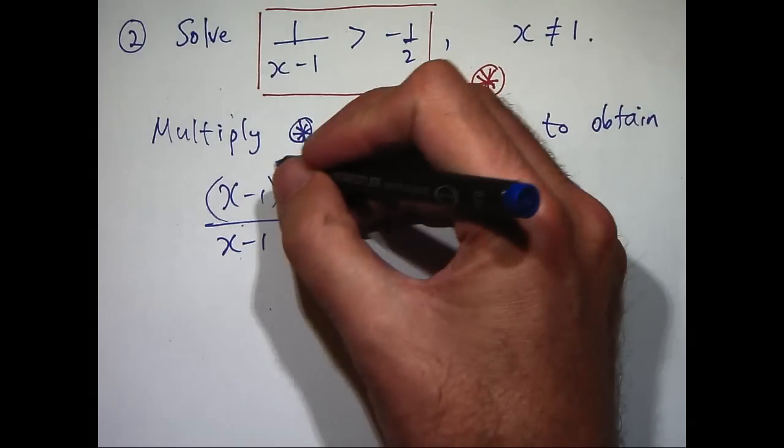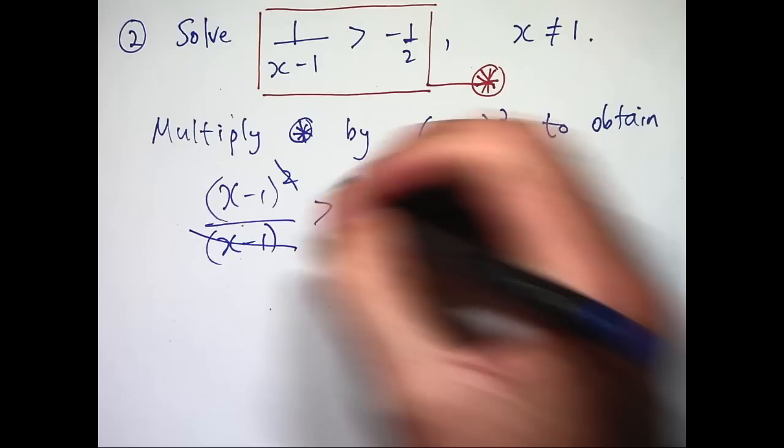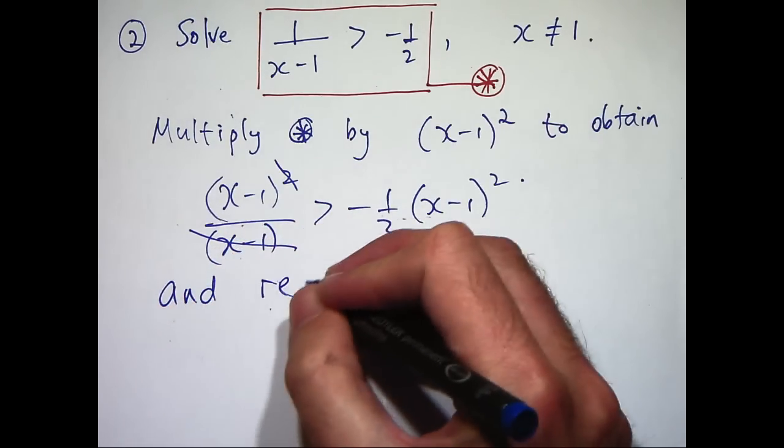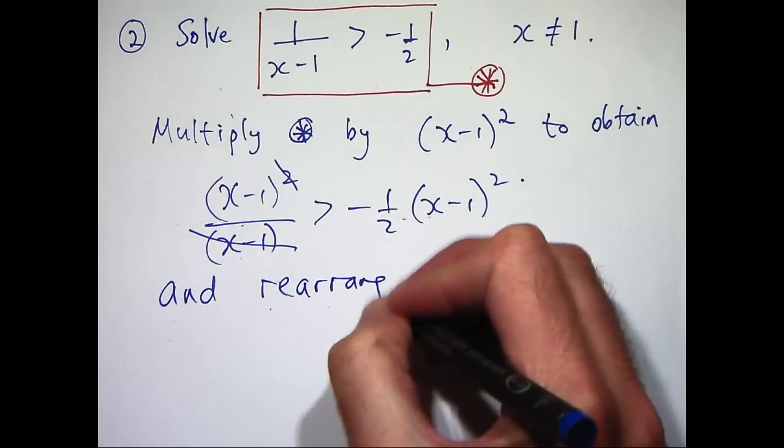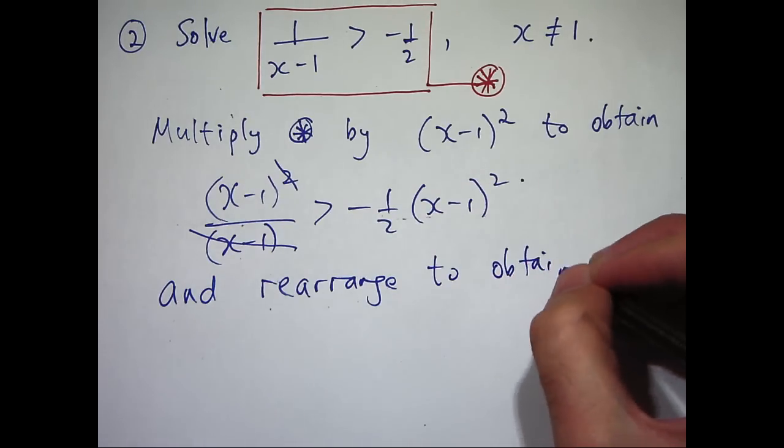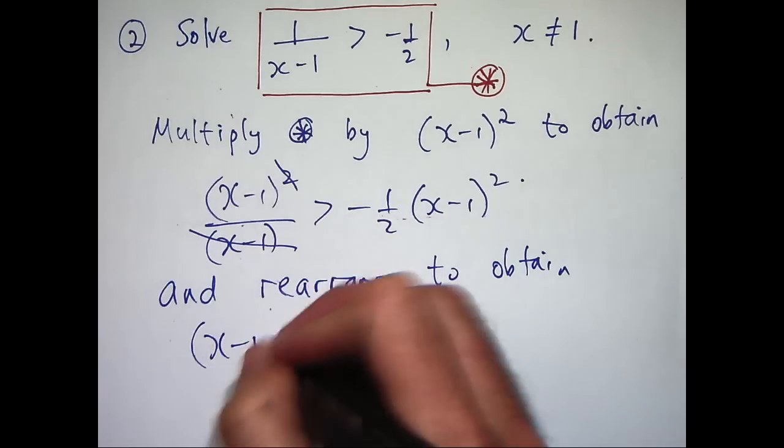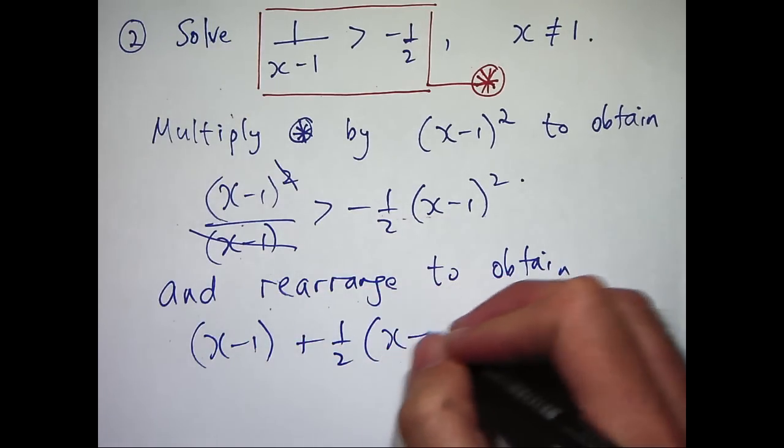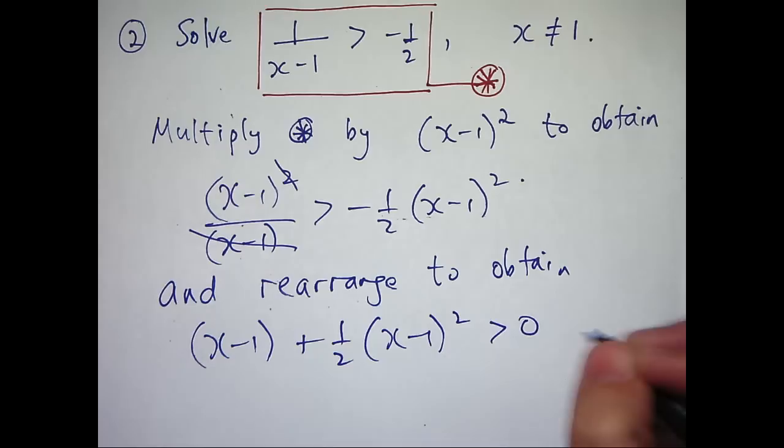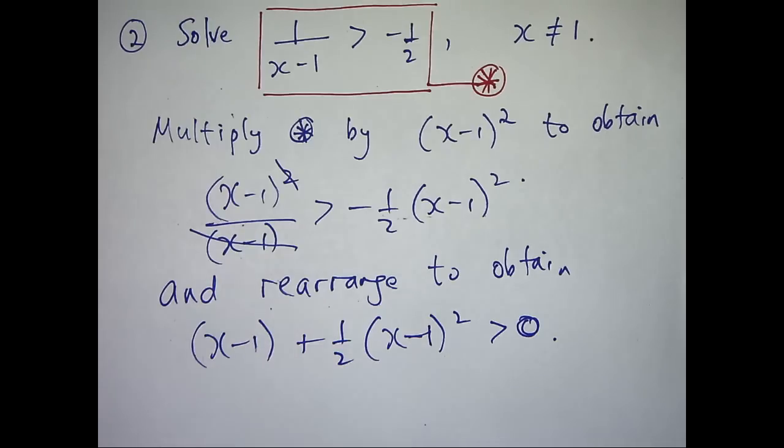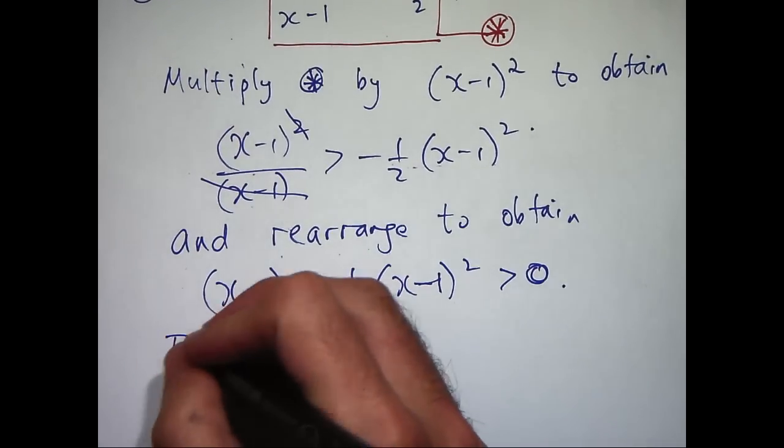So we can see here that we're going to get some cancellation and let's rearrange, bring all the x's to the other side and we'll get something a little like this. Now you can see here that we have a common factor of x minus 1, so we can take this out and again simplify.